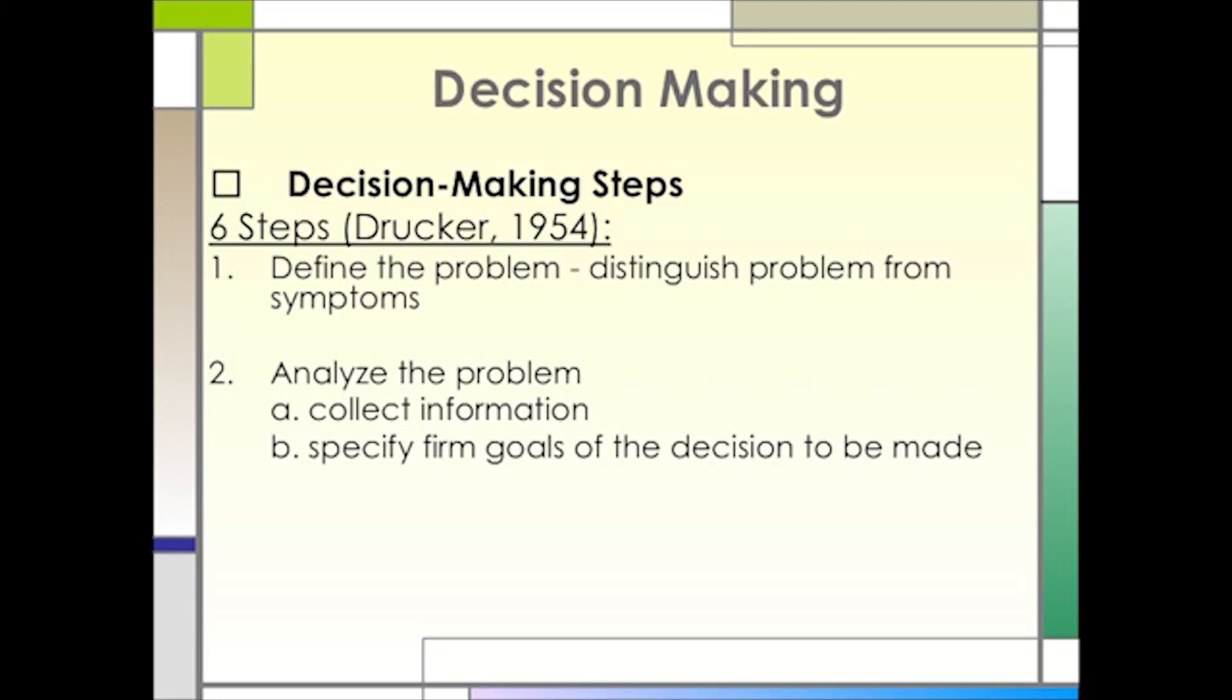Next, you need to analyze the problem by collecting information. Why are you losing readership? You may find it is because you have cut staff and therefore your coverage is suffering. People aren't getting the stories they want to read, so they are canceling their subscriptions. You also need to specify the goals of the decision to be made. Is the goal to get the ad revenue back, or is it to live with what you have?